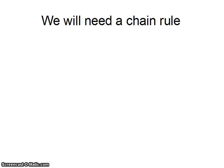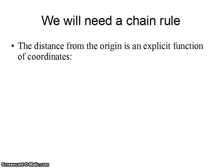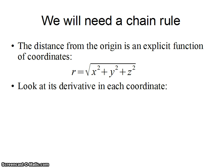So if we're going to do that, we're actually going to need a chain rule. The distance from the origin is explicitly a function of the coordinates, right? It's the square root of the sum of the squares of coordinates. The functions that I'm dealing with are functions explicitly only of the variable r. So I'm going to want to look at the derivatives of this r with respect to each of the coordinates.